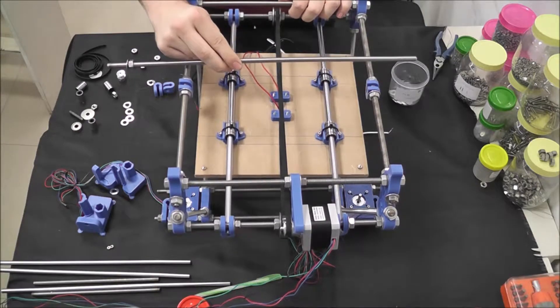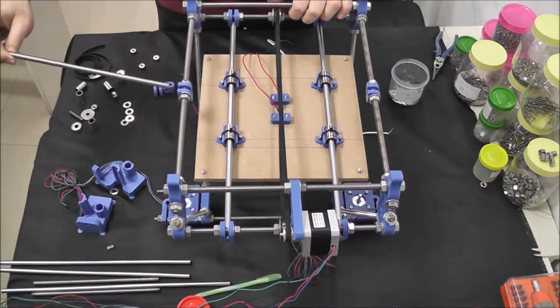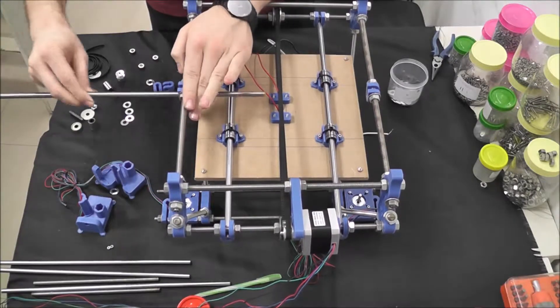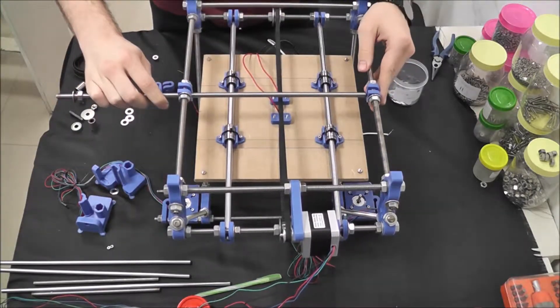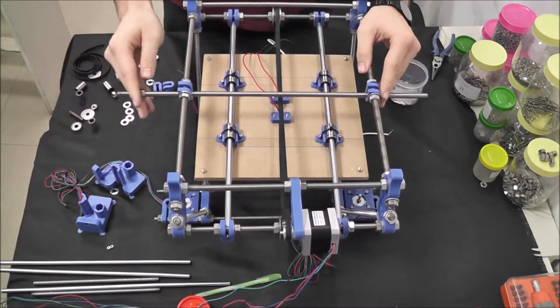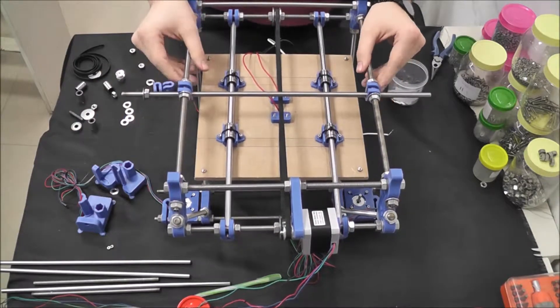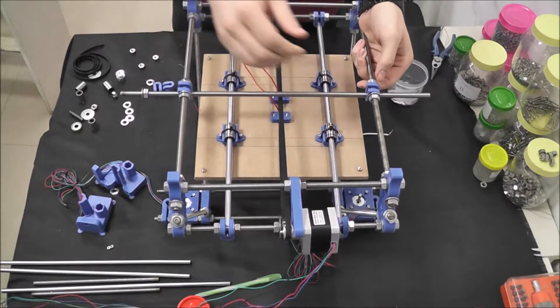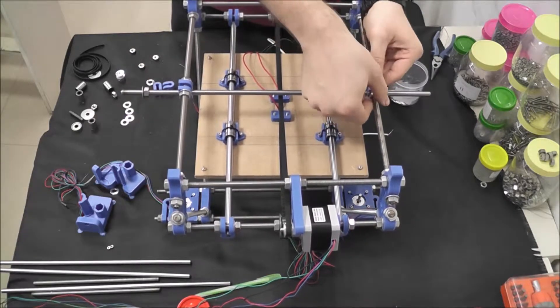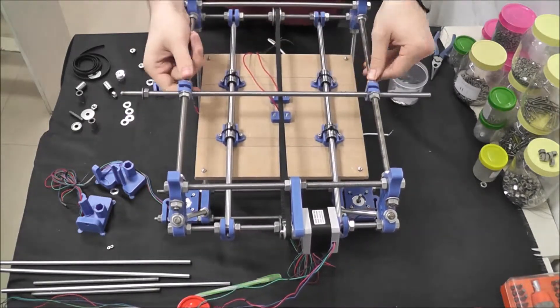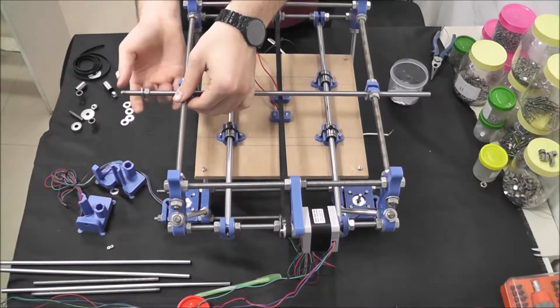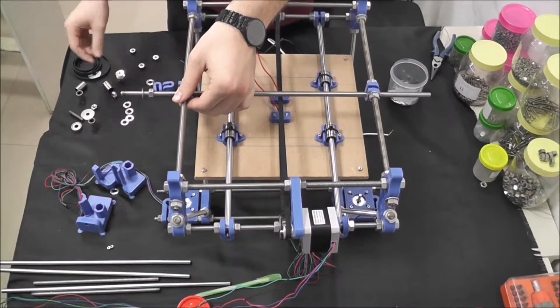We're going to start off by using our 420 millimeter threaded rod and sliding it through the two bottom bar clamps on the frame of the printer. Try and make sure that's about evened up. We're going to tighten these right now just to keep them in place, but we're going to have to line them up so that they are lining up with the Z motor mount bar slot, this groove.